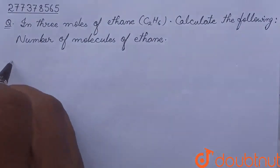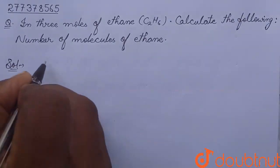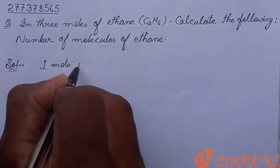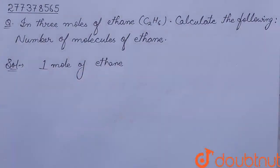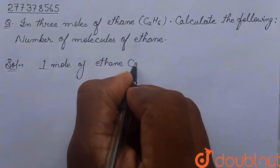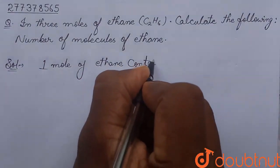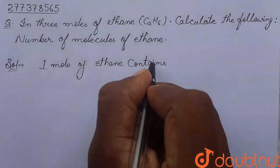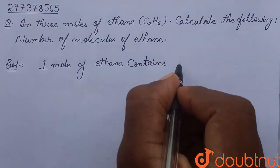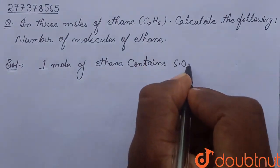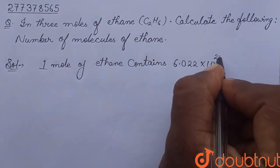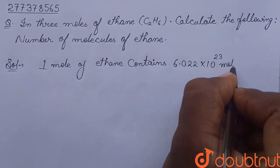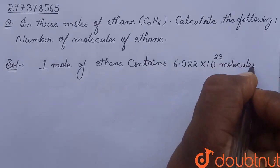So, we know that 1 mole of ethane contains Avogadro's number of molecules. Or we can say, it contains 6.022 into 10 to the power 23 molecules.